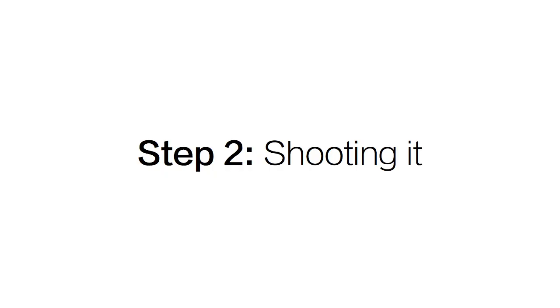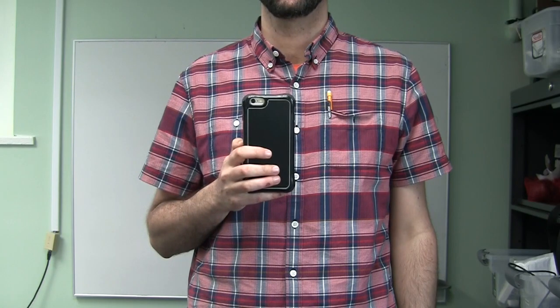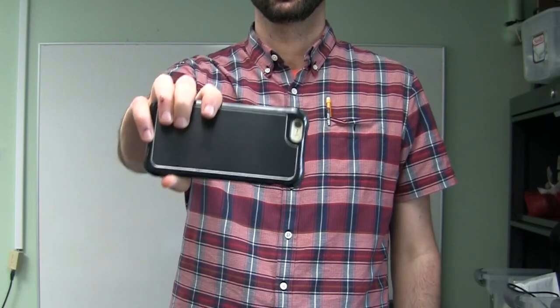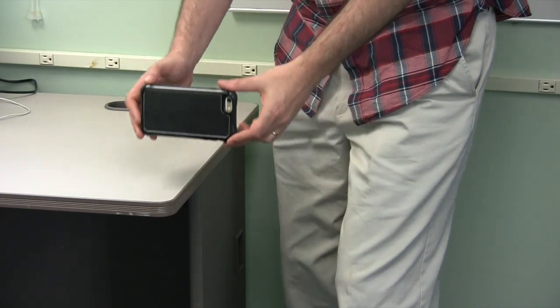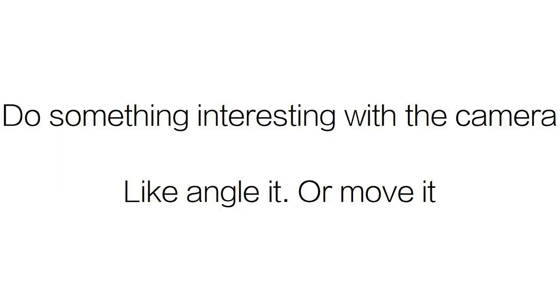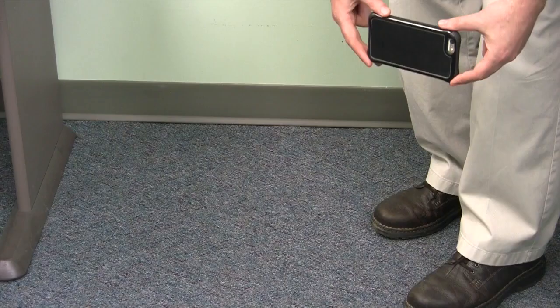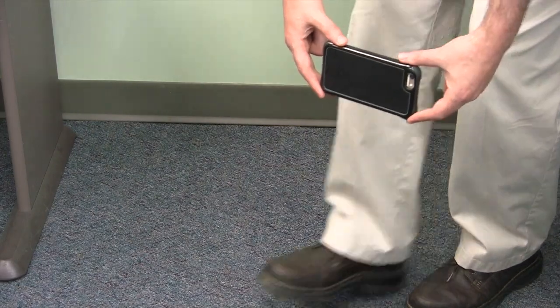The second step in the filmmaking process is shooting. First of all, don't be that guy who stands there and films vertically. And don't keep the camera at waist height all the time with a shaky shot. Hold the camera close to your body and lock your elbows, or even better, put it on something solid like a table. Try to do something interesting with the camera — put it at an interesting angle and move with it. So if you're filming baby's first steps, hold the camera close to the ground and follow the subject.